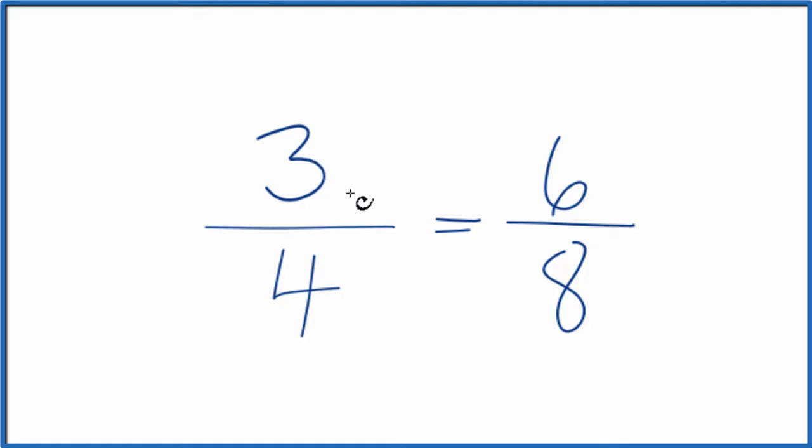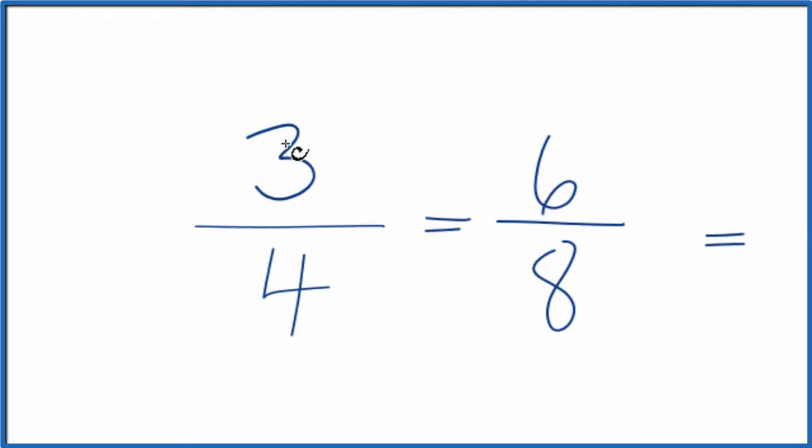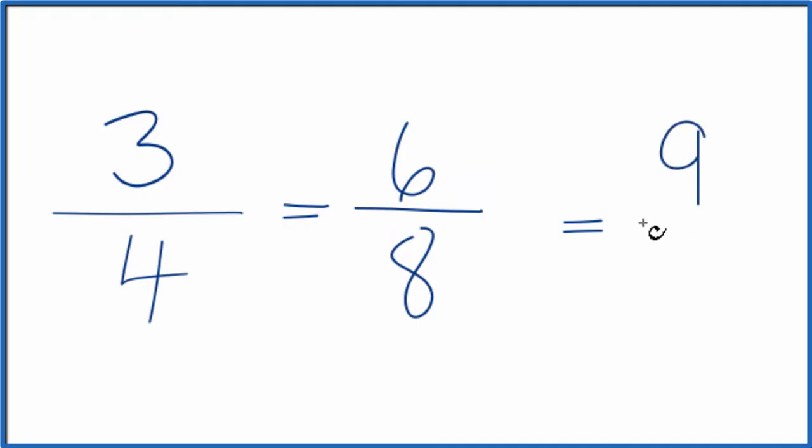We could also multiply the numerator and denominator by 3. 3 times 3, that's 9. 3 times 4 is 12. Another equivalent ratio.